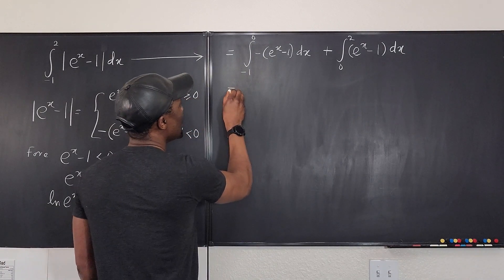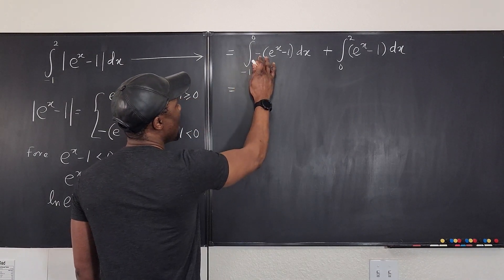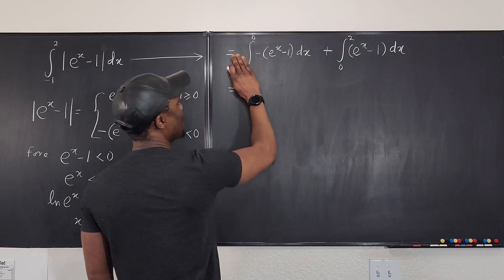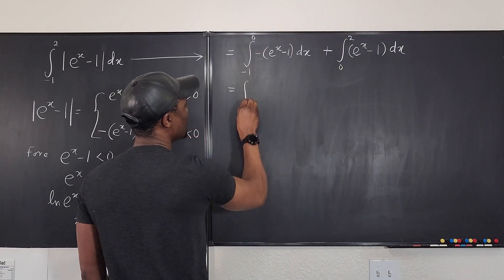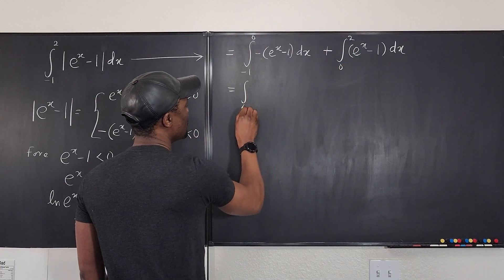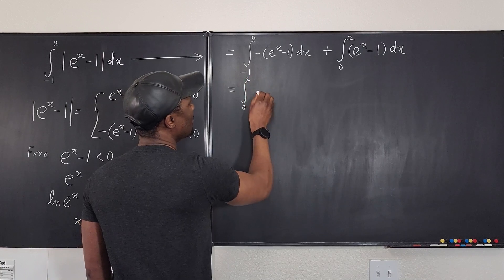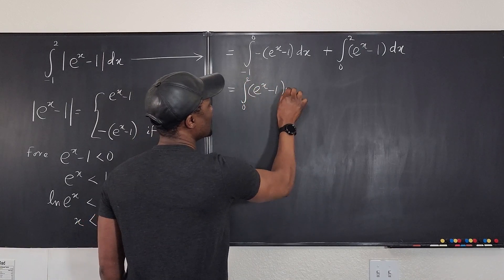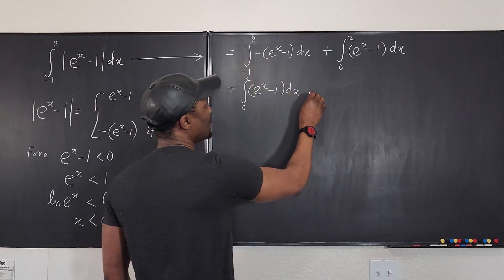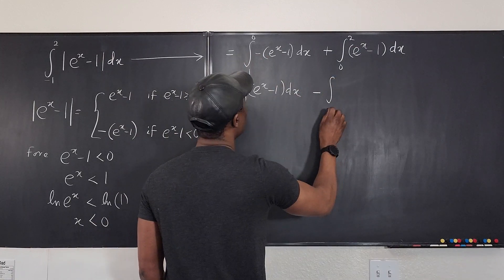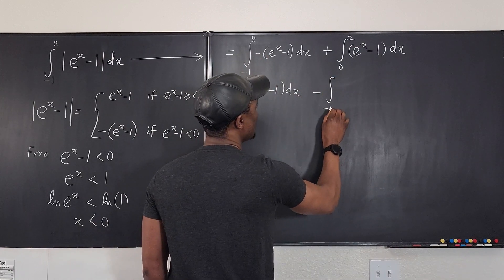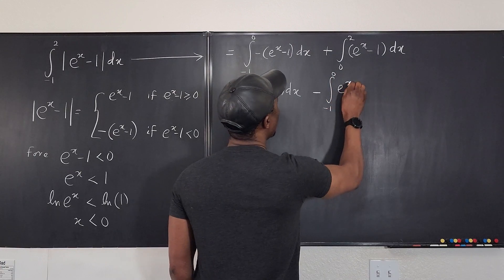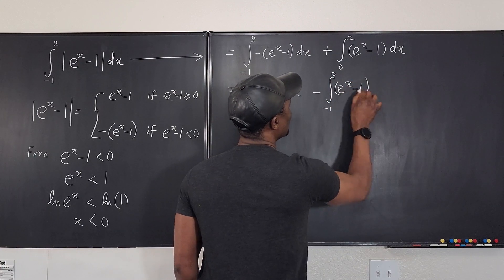So this becomes — if I move the negative forward — I can actually bring this forward and put this behind. So it's going to be the integral from zero to two of e to the x minus one dx, minus the integral from negative one to zero of e to the x minus one dx.